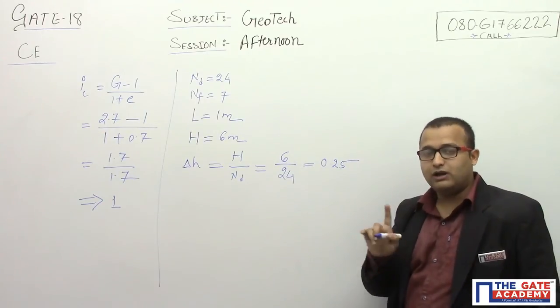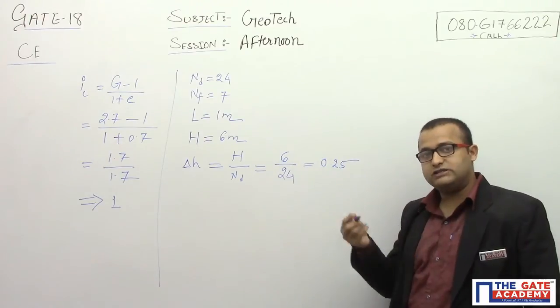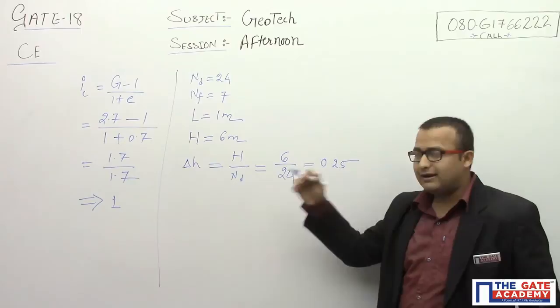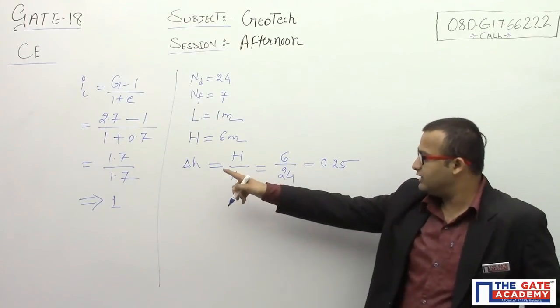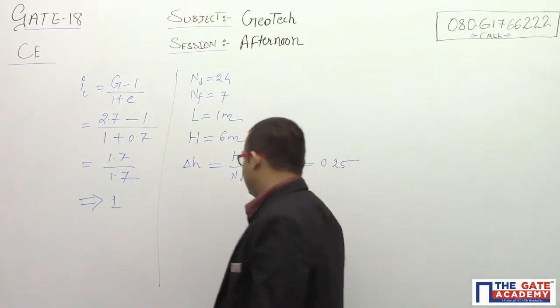I want to calculate the actual hydraulic gradient. Actual hydraulic gradient means the head loss divided by the length. The length of flow line is known to me. The head loss per drop is also known to me, I have calculated the value 0.25. So I can calculate the actual hydraulic gradient.